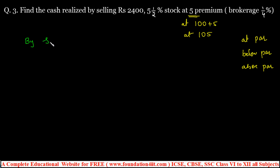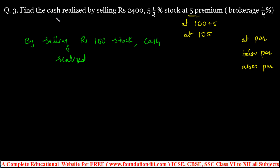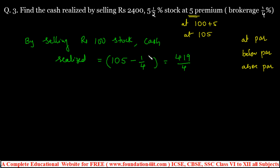By selling rupees 100 stock, the cash realized is: stock at 105 minus brokerage 1/4 (subtracted because selling). 105 − 1/4 = 419/4. So by selling rupees 100 stock, cash realized is 419/4.